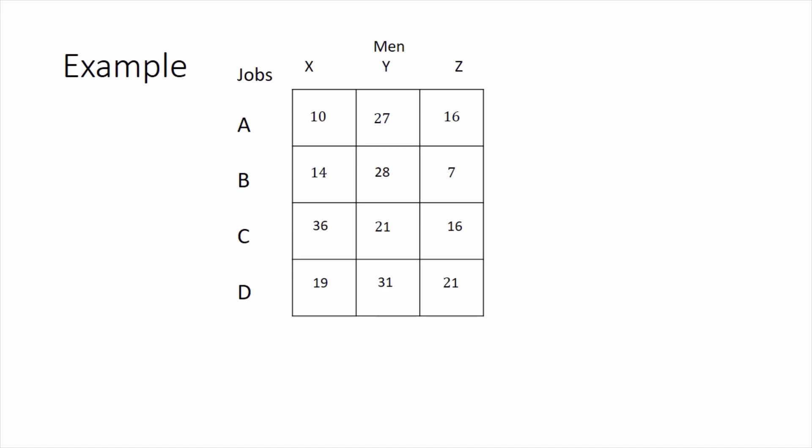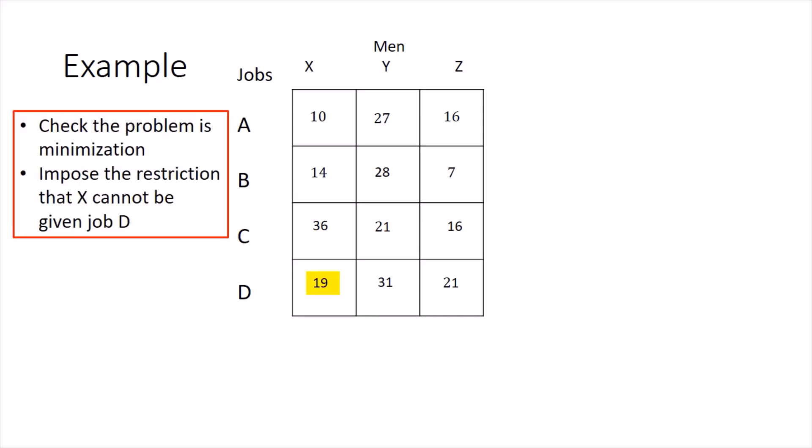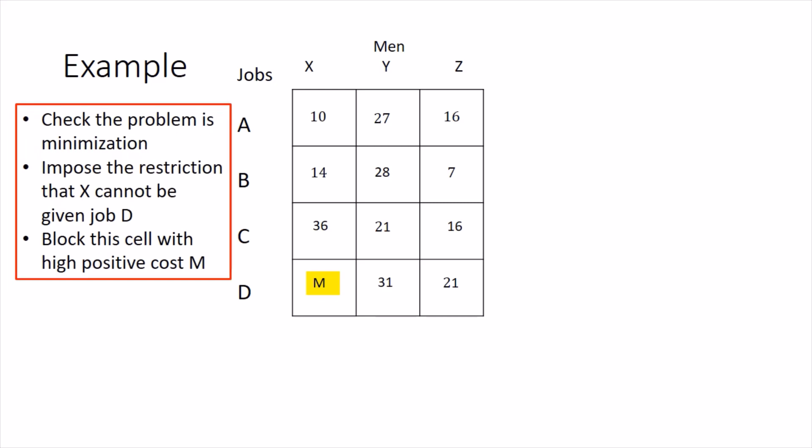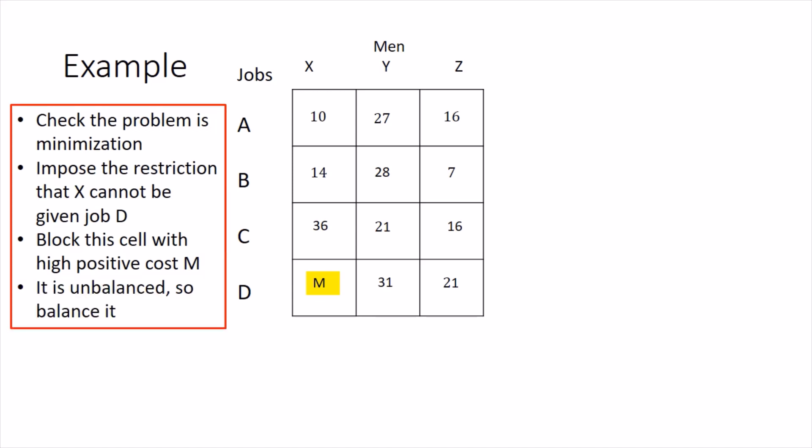We need to learn how to incorporate this kind of restriction mathematically into the system. Here is the matrix form — it's already a minimization problem, so no conversion needed. To impose the restriction, we block the cell corresponding to person X and job D. Since assignments are made at zeros, and zeros are created from the minimum entries, we forcefully make that cell very high so that a zero is never created there and that cell never gets allocated. This is done by assigning a highly positive cost M to that cell.